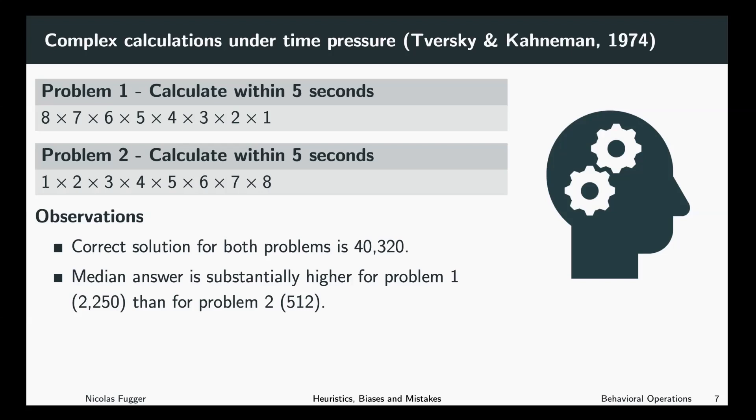The correct solution is 40,320. What Kahneman and Tversky observed was that the median answer is substantially higher for problem one than for problem two.